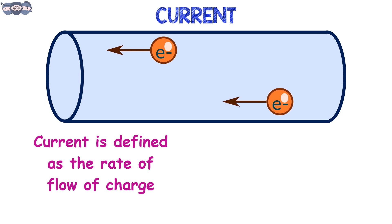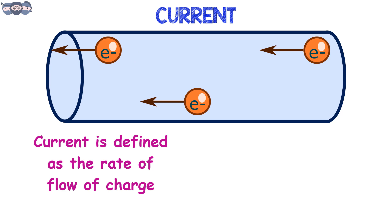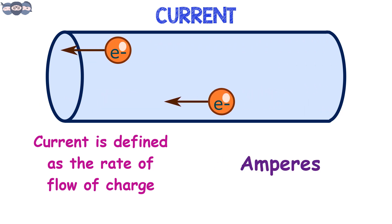Current is defined as the rate at which charge flows. Current is also said to be the flow of charge. The unit of current is amperes.